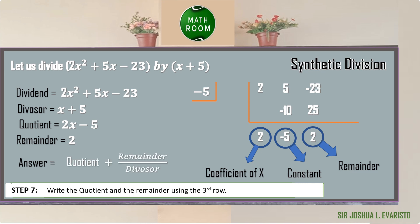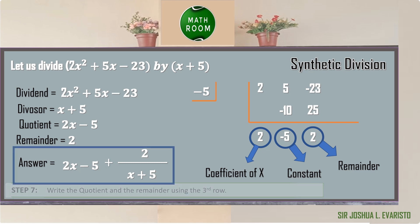To write the answer, we use quotient plus remainder over divisor, wherein the quotient is 2x minus 5, the remainder is 2, and the divisor is x plus 5. Therefore, the answer is 2x minus 5 plus 2 over x plus 5.